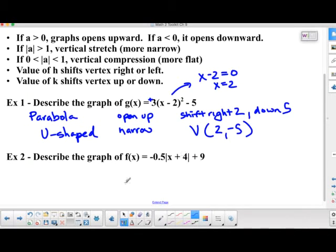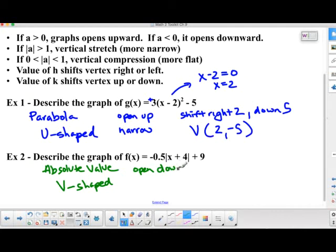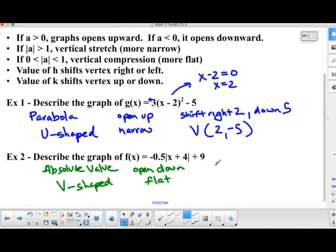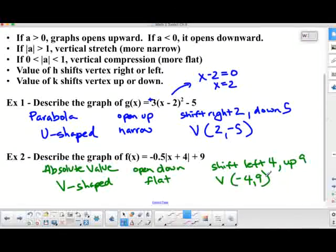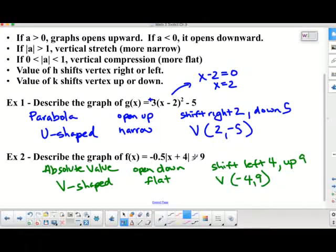So now we have absolute value. And once again, the same effects of a, h, and k are in play here. So I know it's going to be absolute value. I'm going to write absolute value. And I know that because I can see the symbols here for absolute value. It's going to be V-shaped, not U-shaped. I know because it's negative, it's going to open down. And I know because this number is between negative 1 and 0, that it's going to be fairly compressed, vertical compression, or more flat. So I'm going to say it's going to be flat. Now, in terms of shifting, it's going to shift left 4, and it's going to shift up 9. So in other words, my vertex is going to be at negative 4, 9. So that's the basics of how these graphs work and how they're transformed by changing the values of a, h, and k.